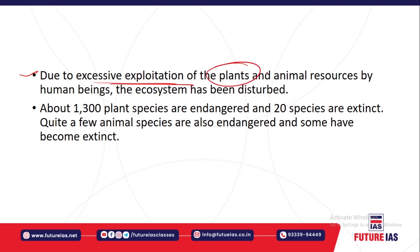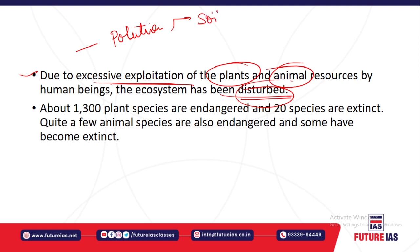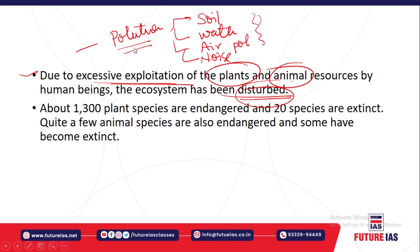Once you remove a particular species, the entire food chain and food web gets affected. Due to excessive exploitation of plants and animals, the ecosystem is getting disturbed. There are different types of pollution — soil, water, air, and noise pollution — causing environmental degradation. Around 1,300 plant species are endangered, 20 species are already extinct, and many such species are going to become extinct in the future.